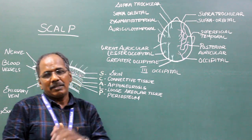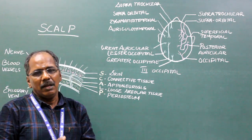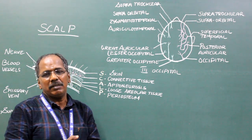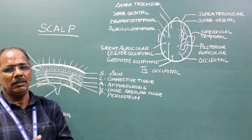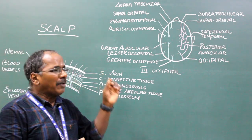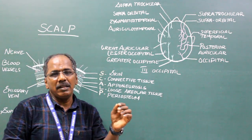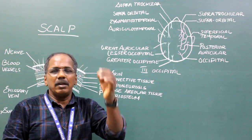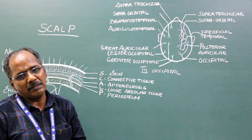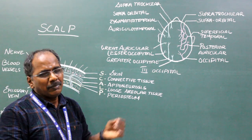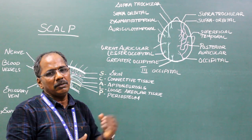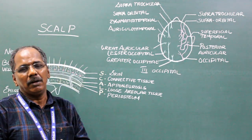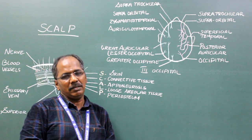Motor supply of the scalp is supplied by two branches arising from the facial nerve. The temporal branch of the facial nerve supplies the frontal belly of the occipitofrontalis. The posterior auricular nerve supplies the occipital belly of the occipitofrontalis.